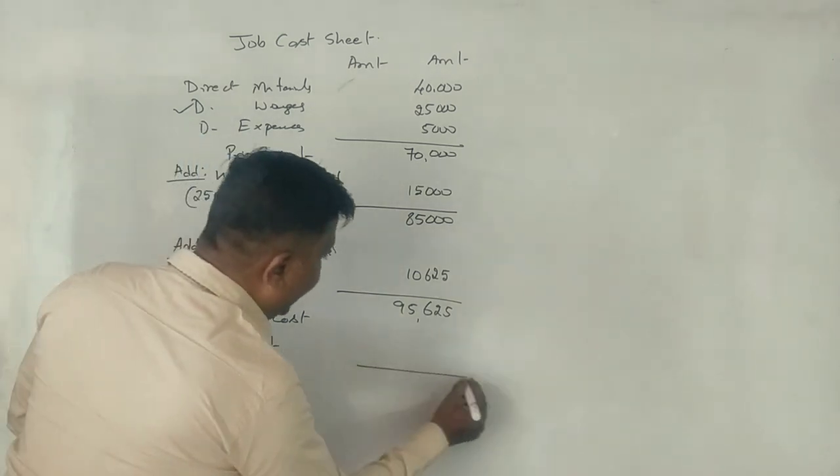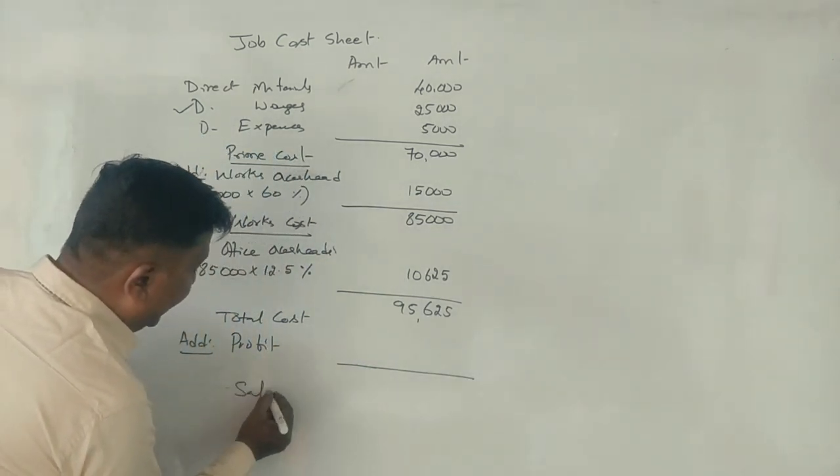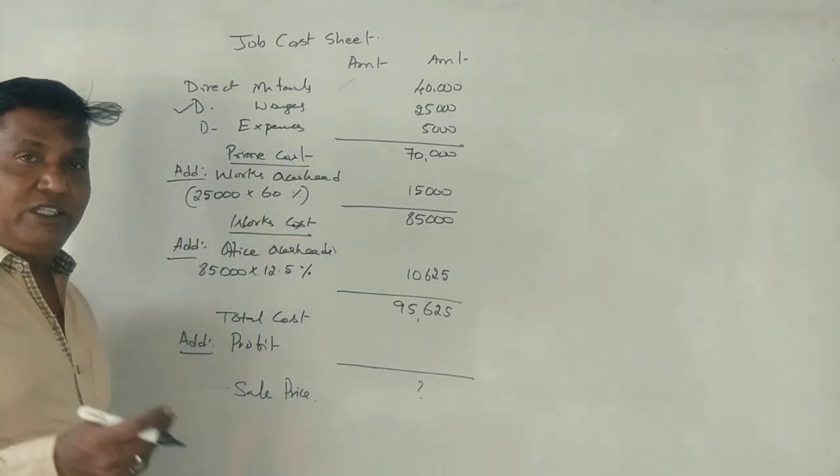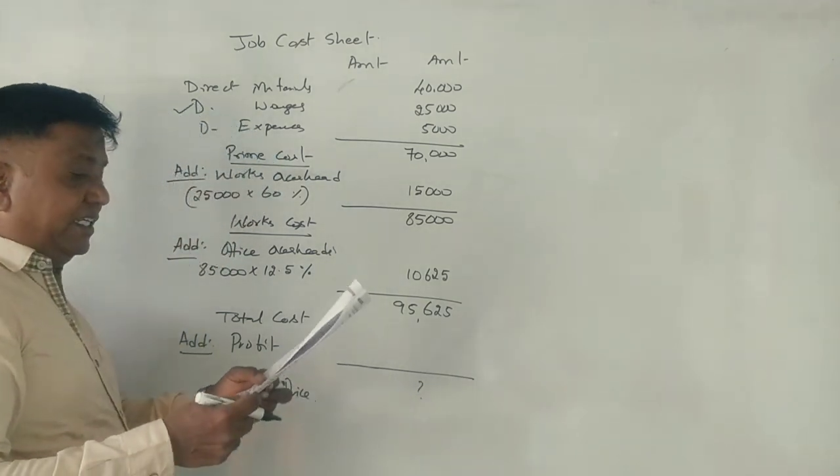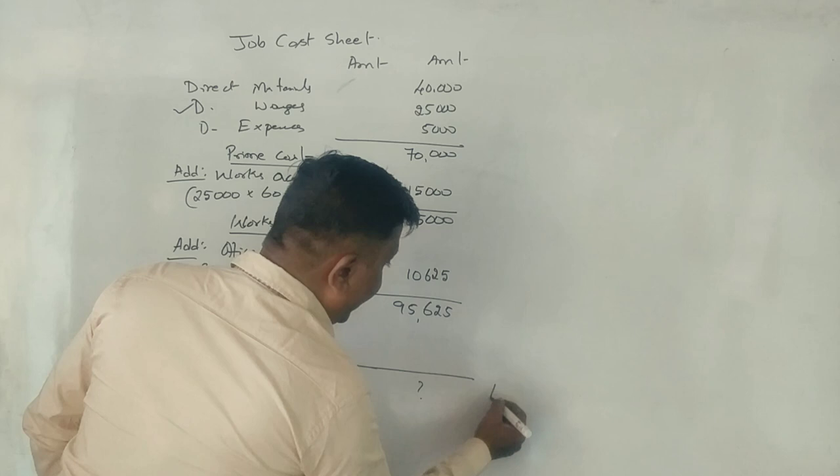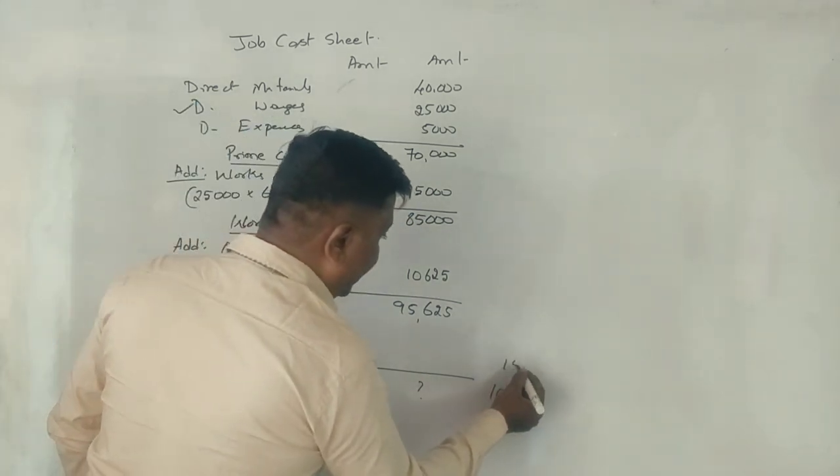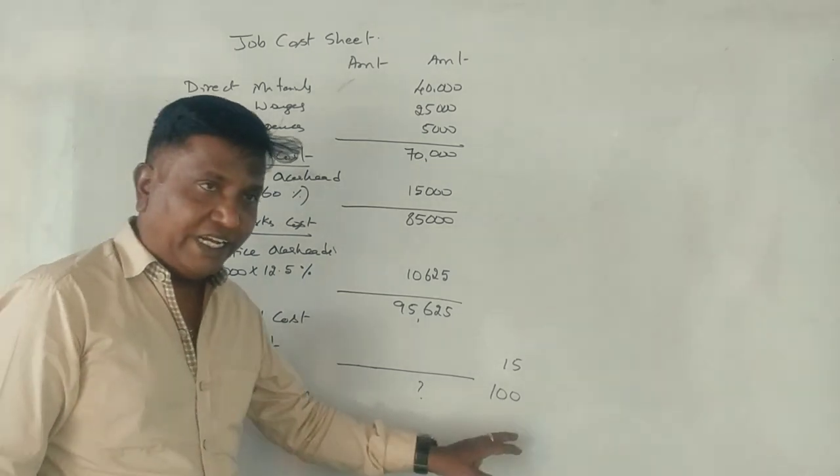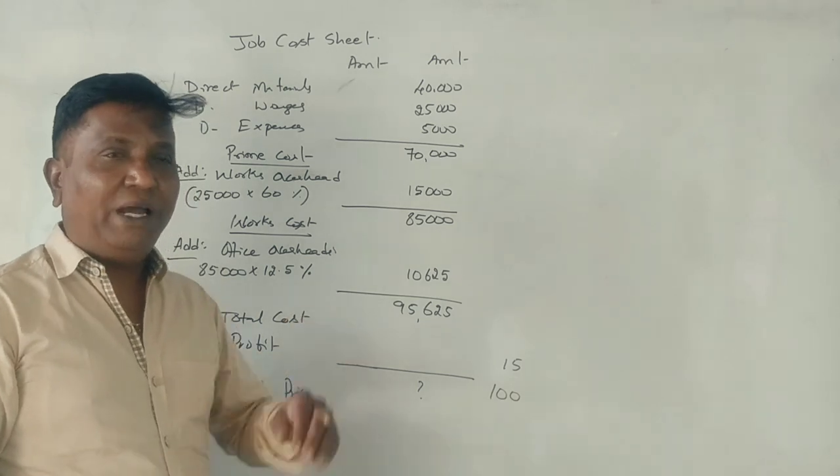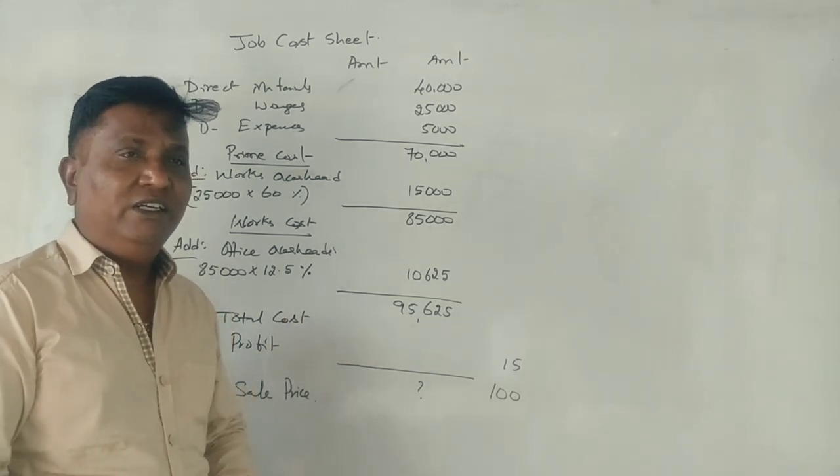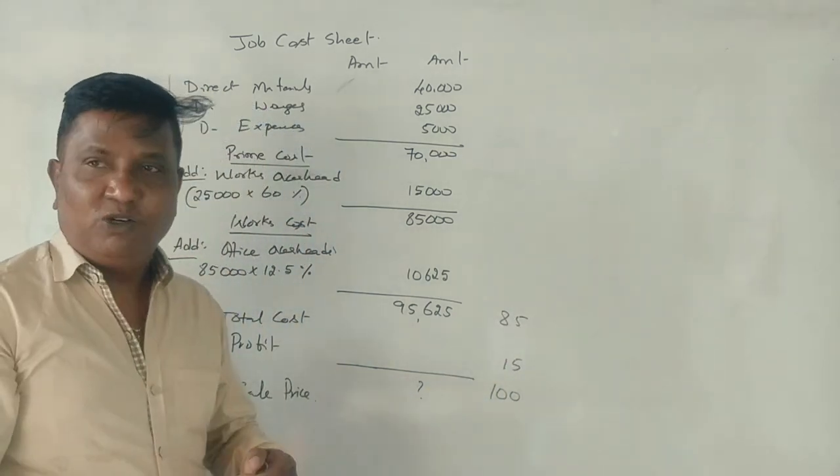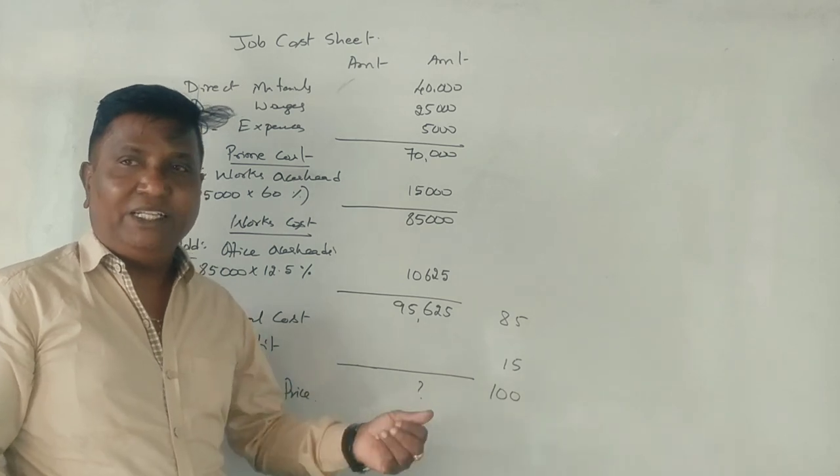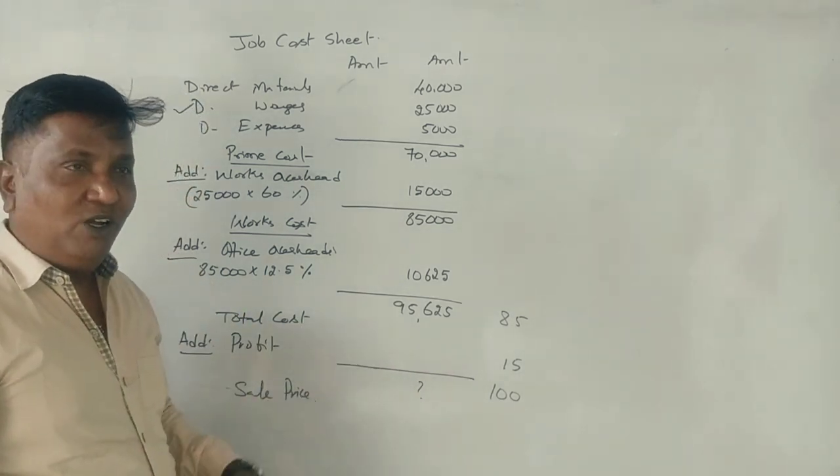Selling price. 100 rupees selling price is here. Profit is what is? 15. If you buy it, 100 rupees is here. How much profit is? 15 rupees. How much is it? 85 rupees. 85 rupees is here, how much profit is?